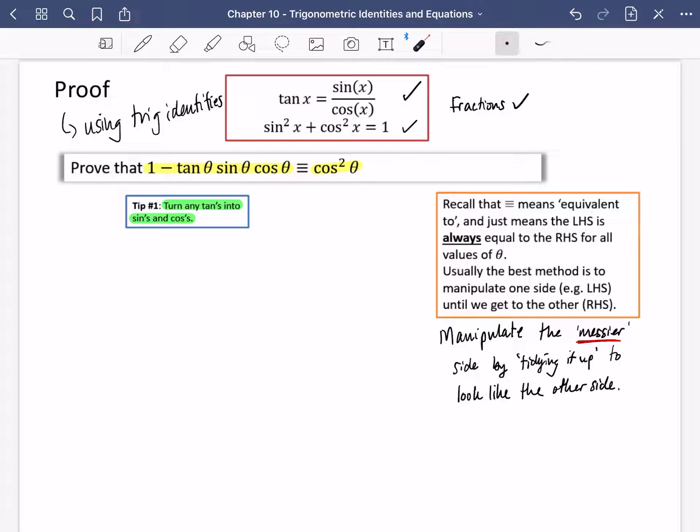I've said here to manipulate the messier side. When you look at this one that I've got here, clearly the left-hand side is the messier side that we have. I want you to pay special attention to the way that I write this out. So I start off by saying that 1 minus tan θ sin θ cos θ is equal to...